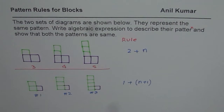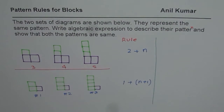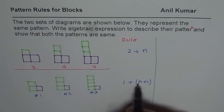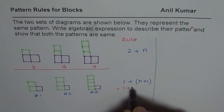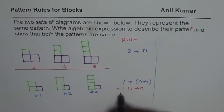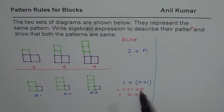The second part of the question is to prove that both these rules are exactly the same. So let us combine: one plus open-bracket n plus one close-bracket. One plus one is two, so we could write one plus one plus n. Now one plus one is two, so we get two plus n. Both expressions simplify to two plus n — they are exactly the same rules but written in different ways.